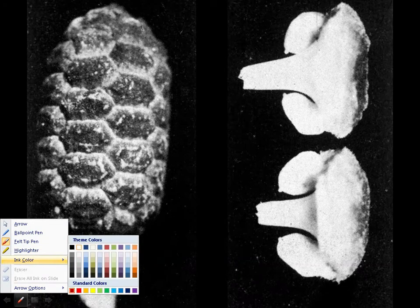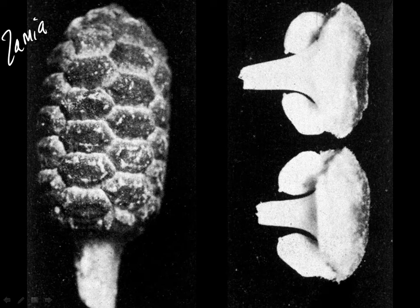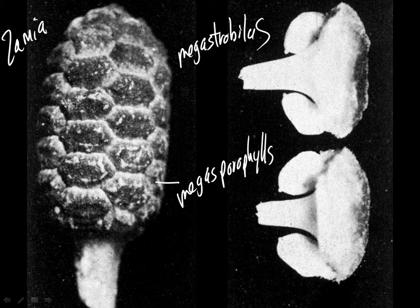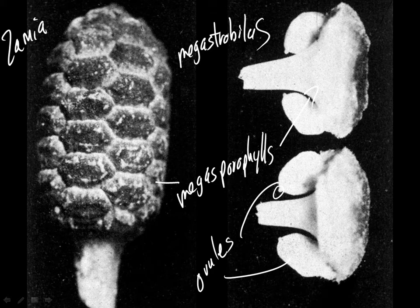Another view of the same kinds of things — this is Zamia again. A megastrobilus, megasporophylls, and ovules. You can look at the tip and see the little projection that surrounds the micropyle. With any luck we'll be able to see those mature in lab — we've often had these mature in lab in the last few years.